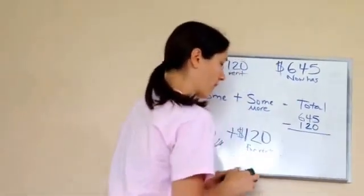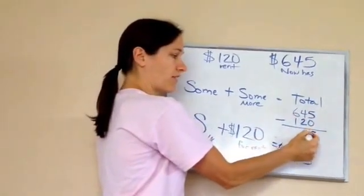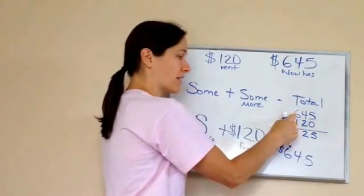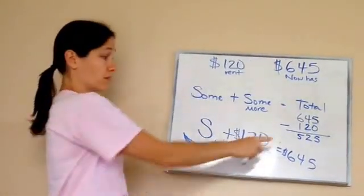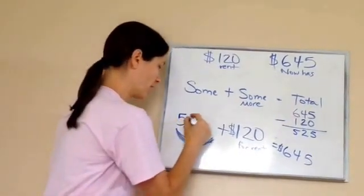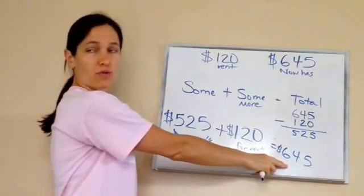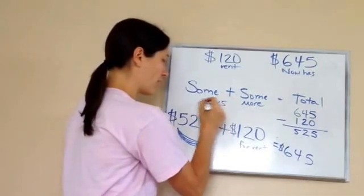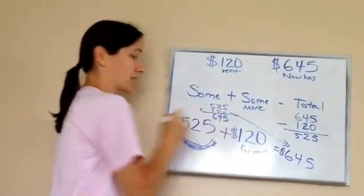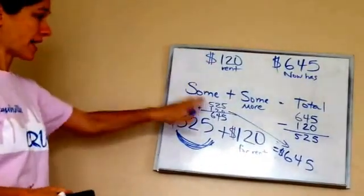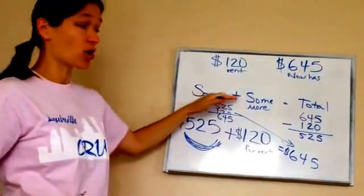So we're going to subtract: 645 minus 120. Five minus zero is five, four minus two is two, six minus one is five — so she had 525 dollars before Jamal paid her rent. Let's check it: 525 plus 120 equals 645. Two plus zero is two, two plus two is four, five plus one is six — yes, 645. You see how we set up this equation? Those are called equations.